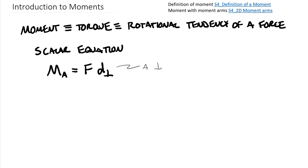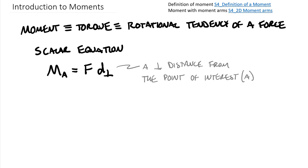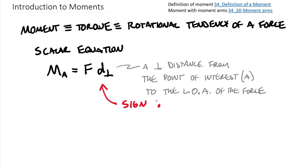D-perpendicular is defined as a perpendicular distance from the point of interest — so we're talking about point A — to the line of action of the force (abbreviated LOA). If you're able to find a perpendicular distance, this is a very simple computation. The only additional thing that comes into this relationship is that the sign comes from the right-hand rule.